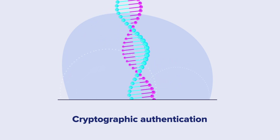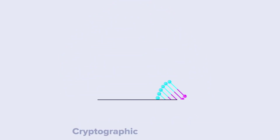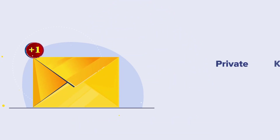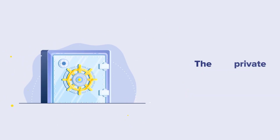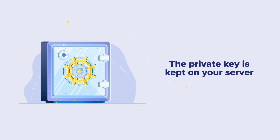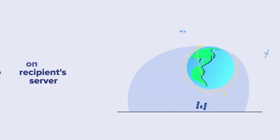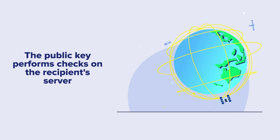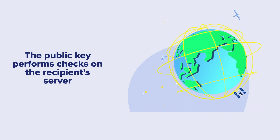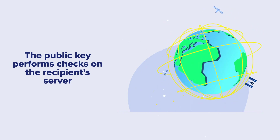Let's explore further and see how it works. DKIM uses a private and public key pair to verify your messages. The private key is kept secret on the server that sends the DKIM-signed email, which can be either your server or your email service provider. The public key is available to everyone and it resides on the recipient's server as it checks the DKIM signatures of the incoming emails.